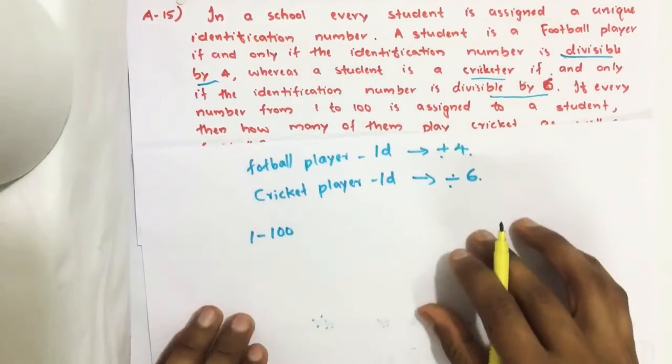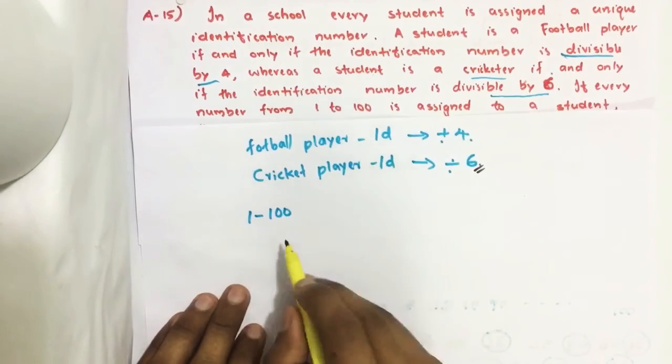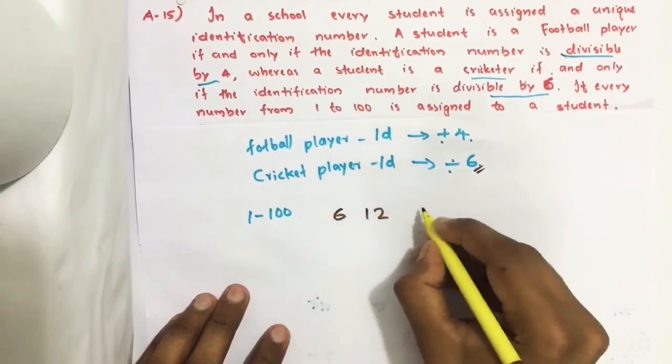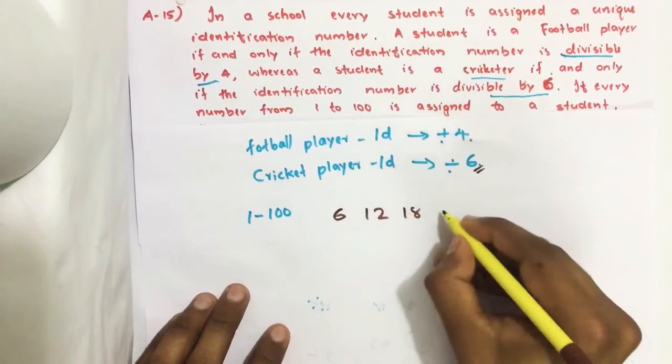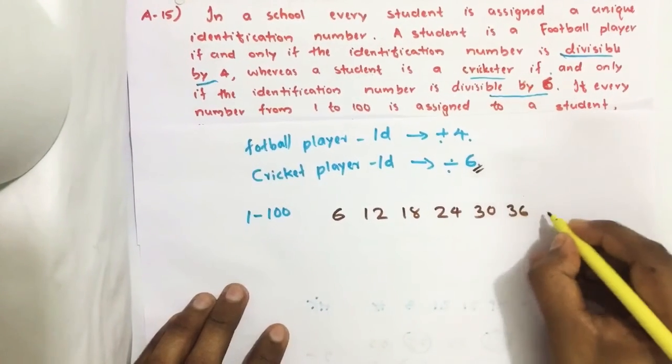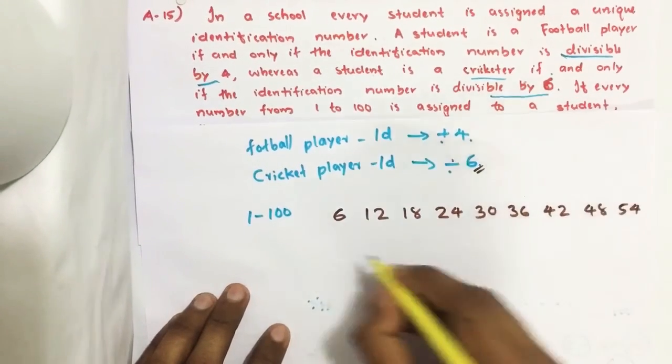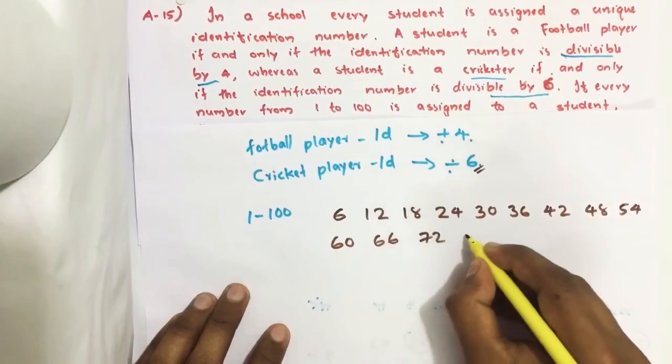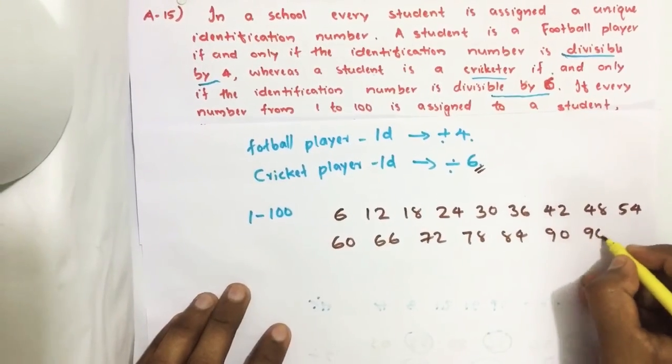First we consider the biggest number 6. How many numbers are there from 1 to 100 which are divisible by 6? So 6, 12, 18, 24, 30, 36, 42, 48, 54, 60, 66, 72, 78, 84, 90, 96.